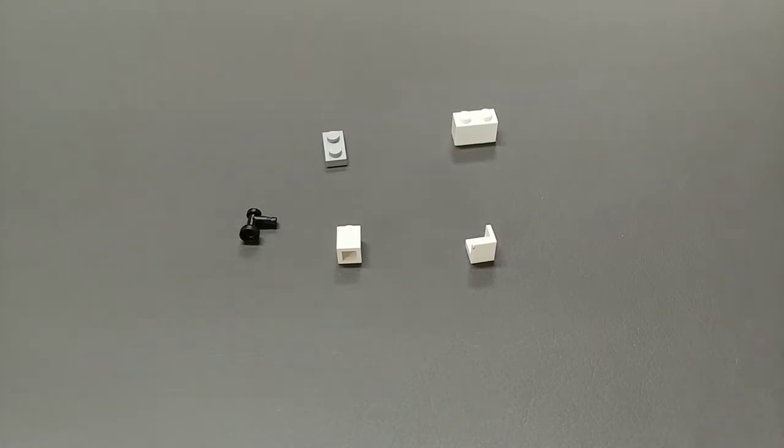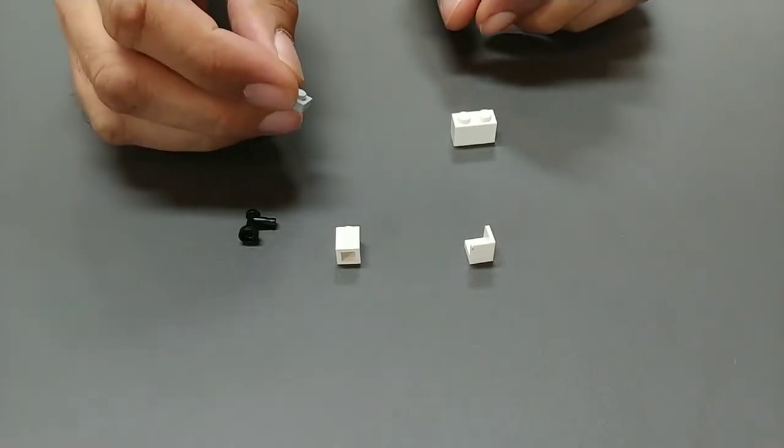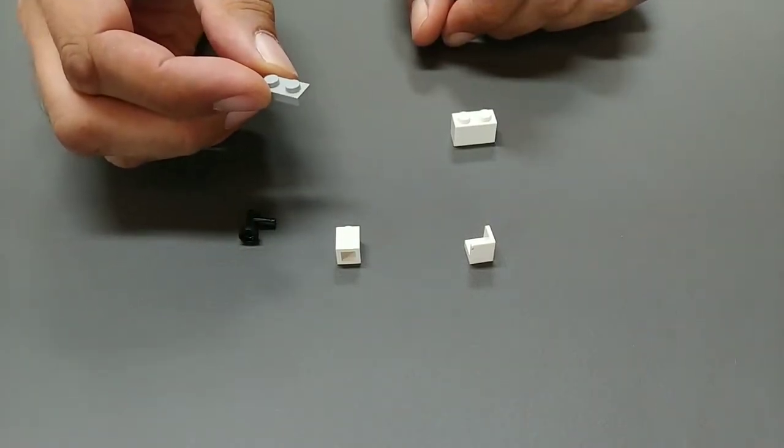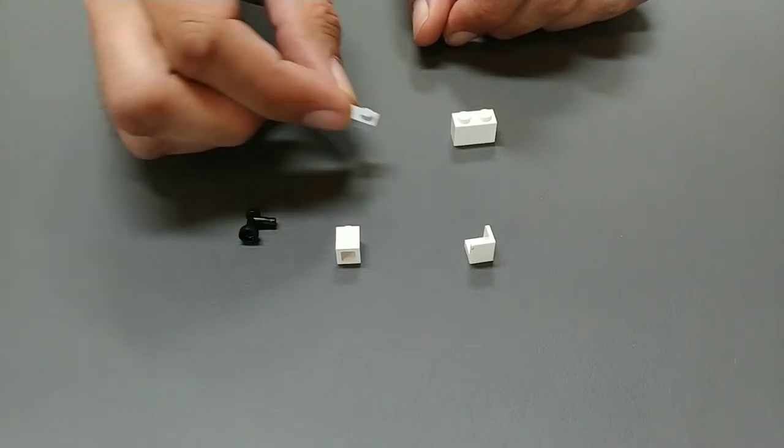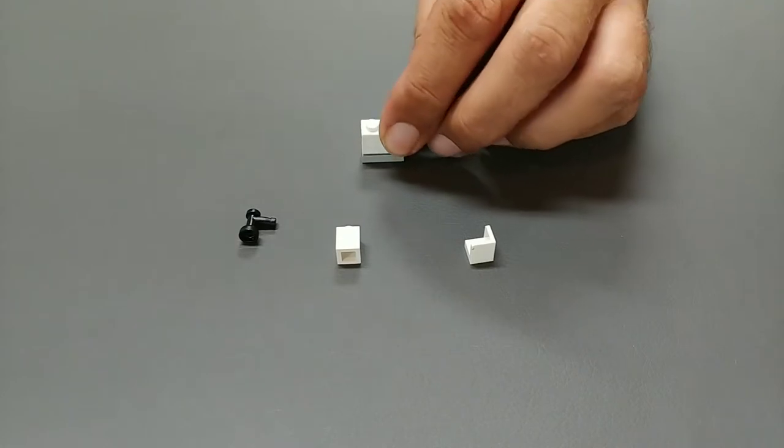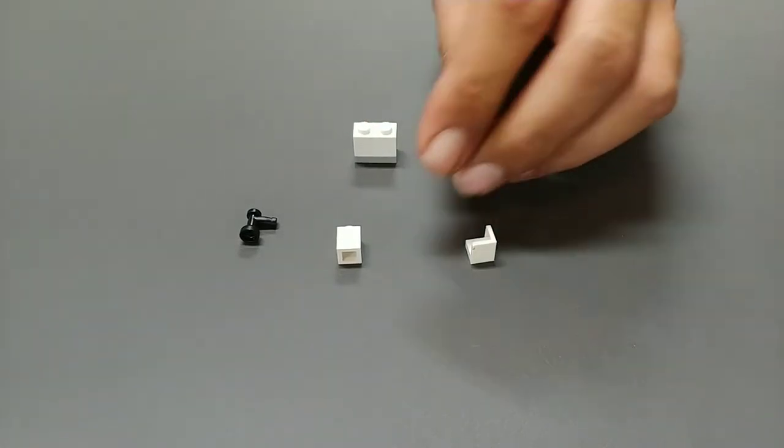The first item we're going to build is the small sink you saw on the far left of the image. Typically what I do when I'm building stuff is I start with a small plate because I like to tile the floors in the builds that I do. So we have the 1x2 gray plate, put the 1x2 white brick on top of that.